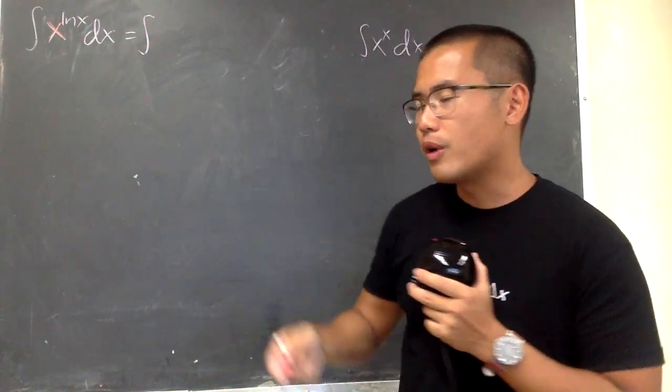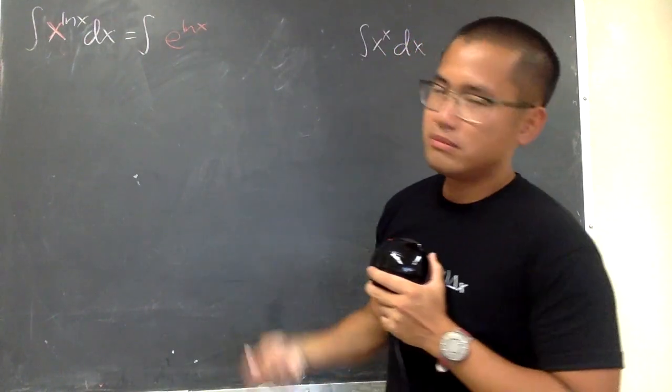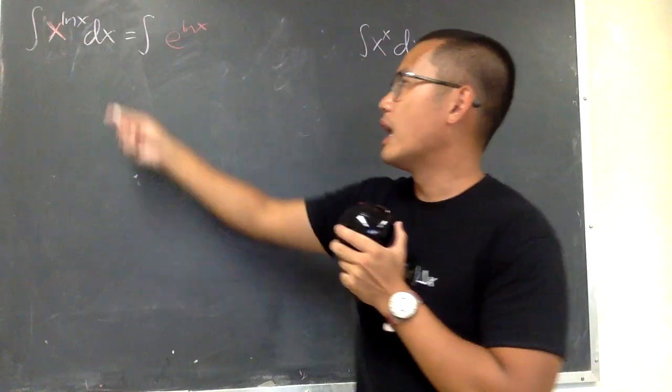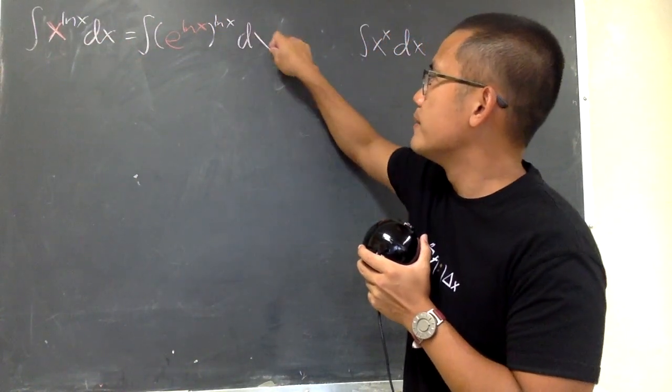This is the same thing. As we all know, we can write x as e to the ln x power. This is still x. However, we still have that ln x on the outside.